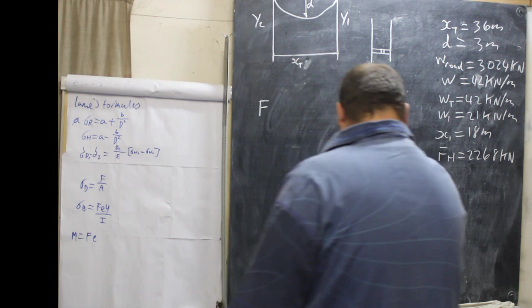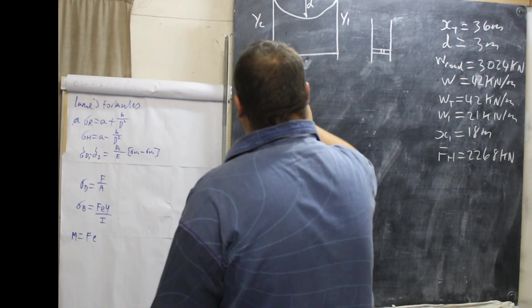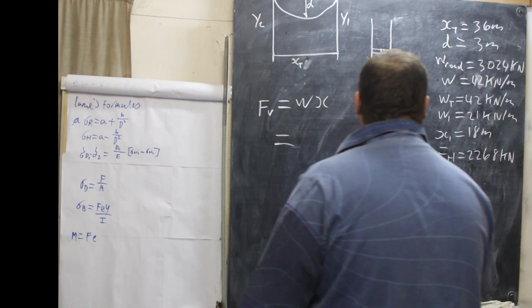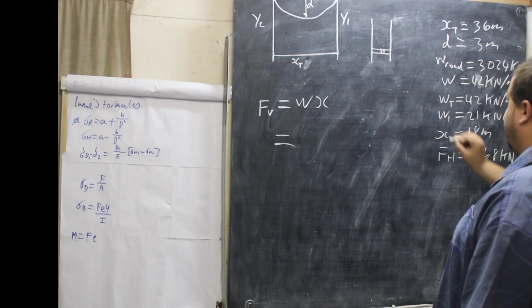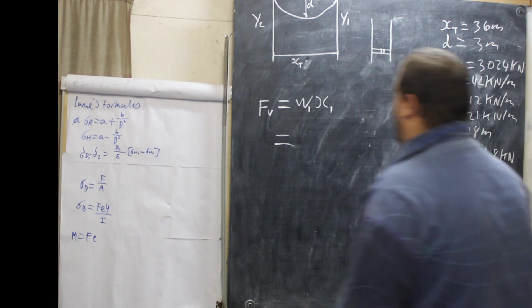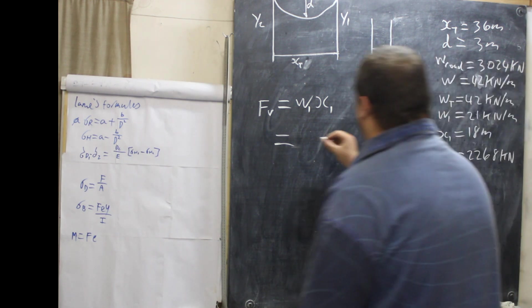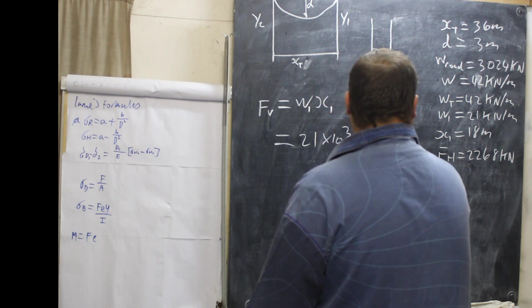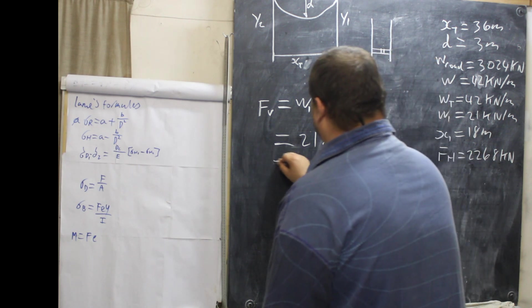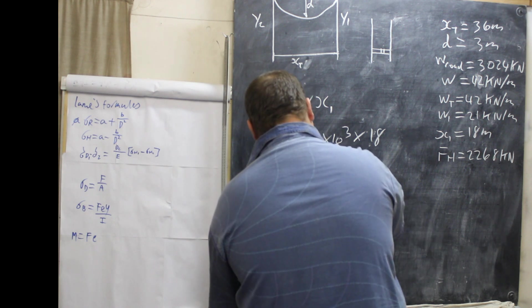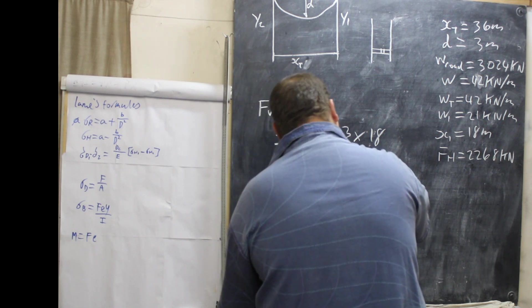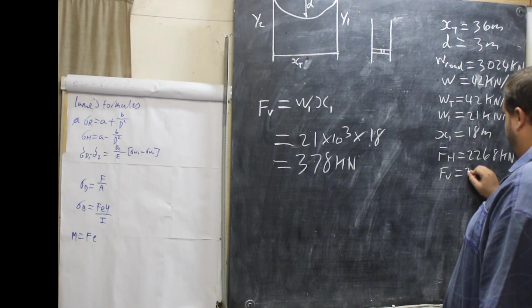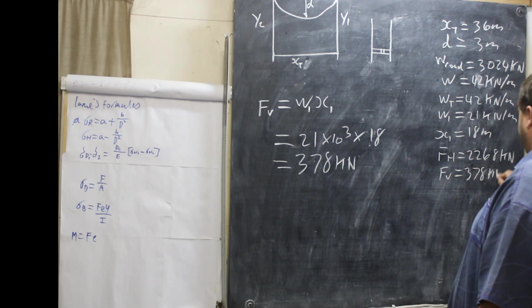Next part is FV. FV equals W1 times X1, which is 21 times 10 to the 3 times 18, giving 378 kilonewtons. So FV is 378 kilonewtons.